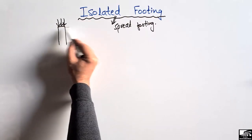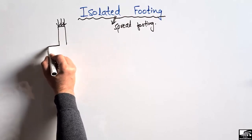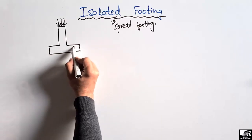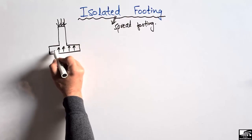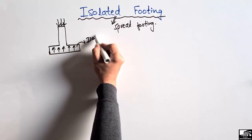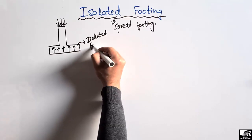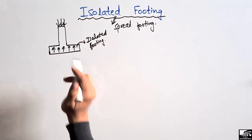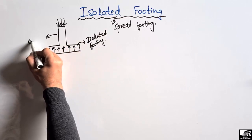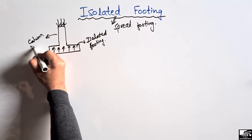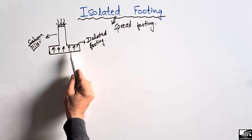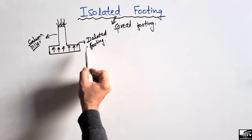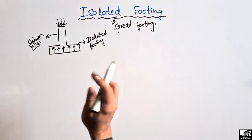The load may be the beam load or the slab load. When this column load is transferred to a footing — let's suppose this is the footing — such type of footing will provide the resistance to the upcoming load of the column. This footing will be called the isolated footing or the spread footing. It is basically the footing used to take the load of a single column, which is the vertical member, whether it is a column, pier, or pillar.